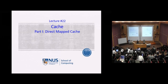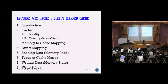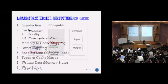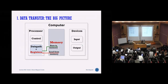We're only going to cover direct map cache — set associative cache has been removed from the syllabus. Once this is done, we will have completed the overall module. Let's recap what the whole system is actually doing.